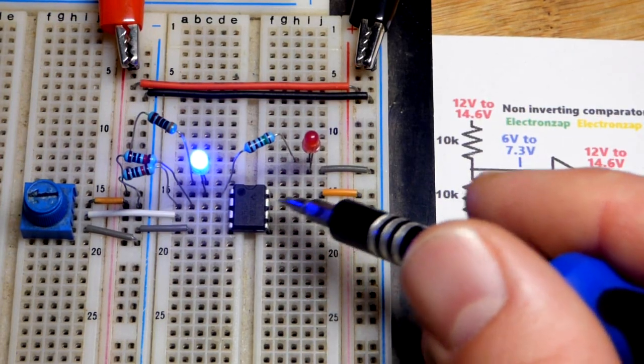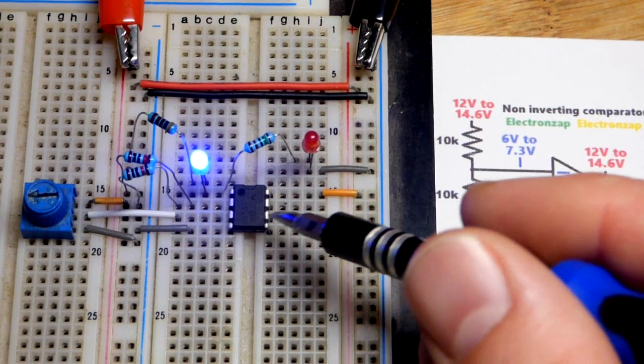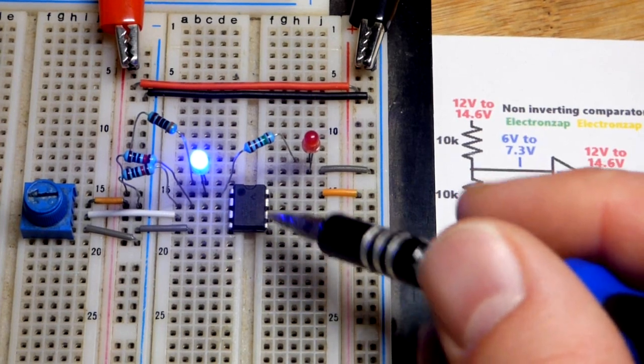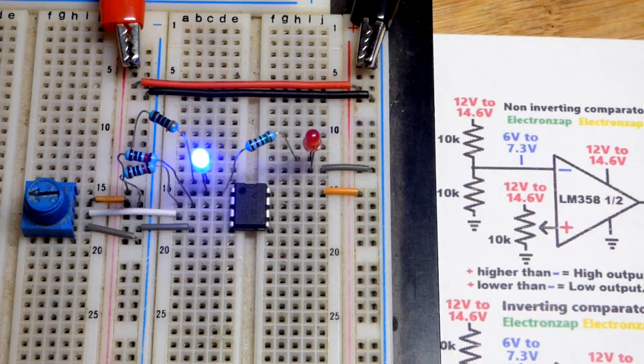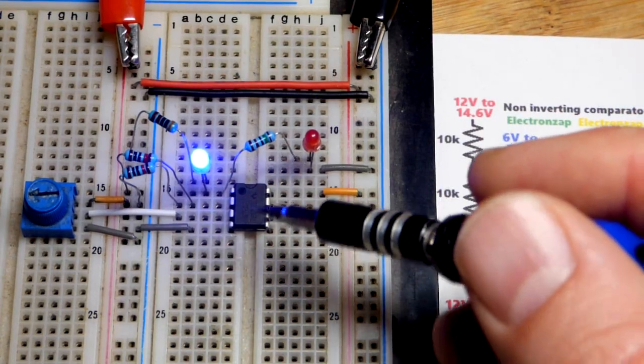That'll make it a voltage follower where it holds the output to ground, otherwise we've got stray signals and stuff that can make it go haywire. But I never have problems just leaving it floating either with other integrated circuits.